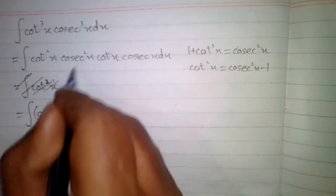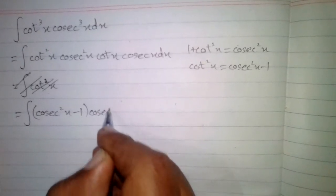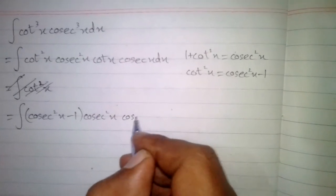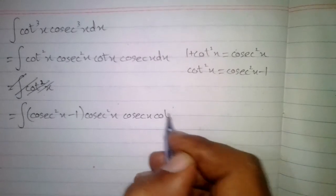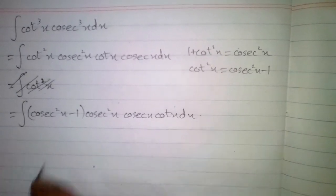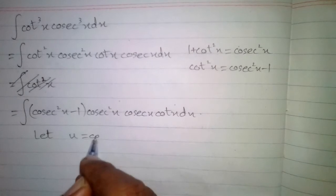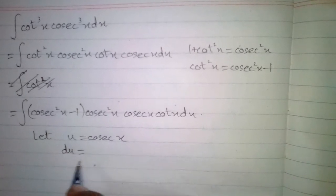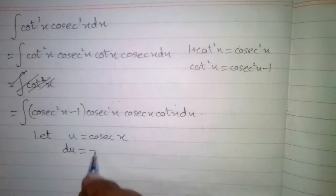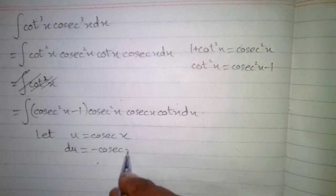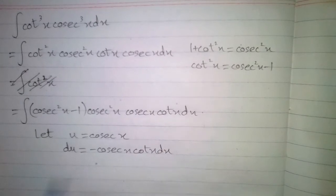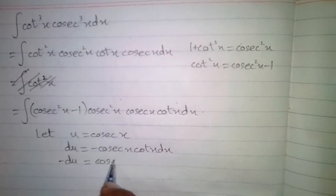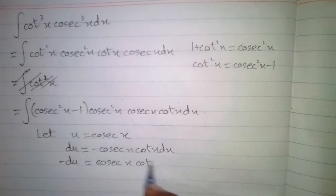And then we have cosec square x, and then cot x cosec x — or we can write cosec x cot x — dx. Now let u equal to cosec x, so the differential du is equal to the derivative of cosec x which is minus cosec x cot x dx, or this can be written as minus du equals cosec x cot x dx.